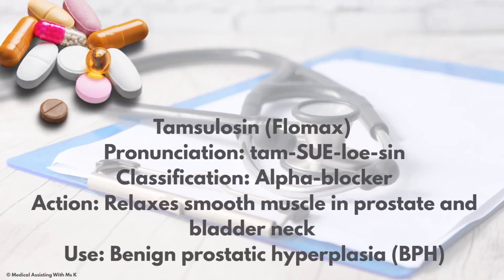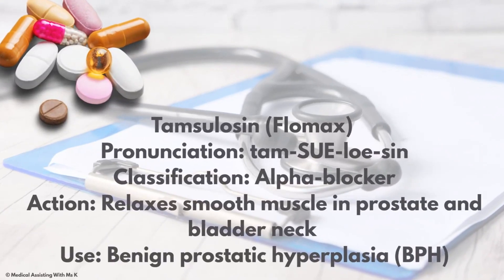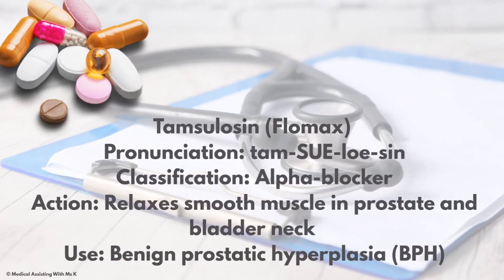Flomax — the generic is tamsulosin. Classification: alpha blocker. Action: it relaxes smooth muscle in the prostate and bladder neck. Use: benign prostatic hyperplasia, or BPH — enlarged prostate, simply put.